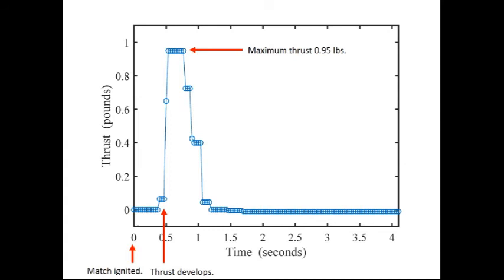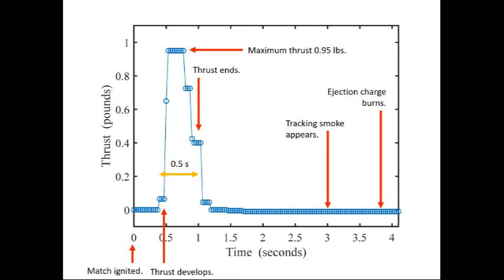Now, approximately half a second later, we see the thrust start to fall. And that matches well with the manufacturer's specification for the burn time of about a half a second. So, you see the thrust falls a little more gradually than it rose. From this point on, we still see flames in the video. But what we're observing is the burning of the delay charge. And this burning does not produce thrust as the propellant does. Next, we see the appearance of the tracking smoke. And finally, the dramatic ejection charge burns and we see the motor jump a little bit. The total time there for the delay in this case was about 2.7 seconds. And that matches well with the manufacturer's specification of a three-second delay for this type of motor.